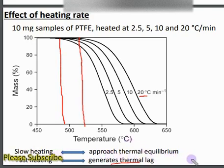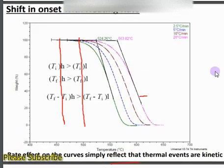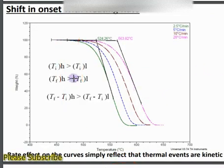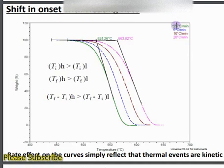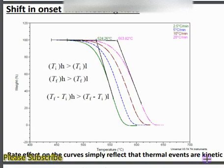With a slower heating rate, the thermal event is better characterized. There is a shift in onset temperature with heating rate — by increasing the heating rate there is a shift in temperature for the same thermal event. This simply reflects that thermal events are kinetic in nature; they depend upon temperature, time, and heating rate.